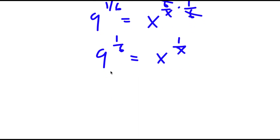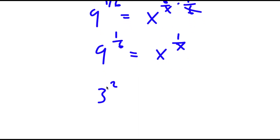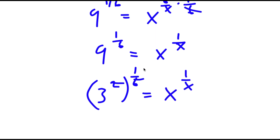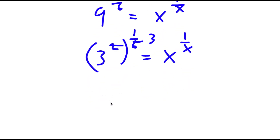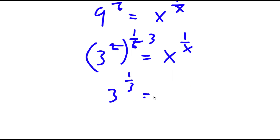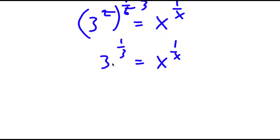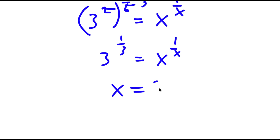Now, 9 is the same thing as 3 squared, so I get 3 squared to the power of 1 over 6 is equal to x to the power of 1 over x. 2 and 6 make 3, so I get 3 to the power of 1 third is equal to x to the power of 1 over x. Notice how this is in the form x to the power of 1 over x — a number to the power of 1 over that same number — meaning x is simply equal to 3.